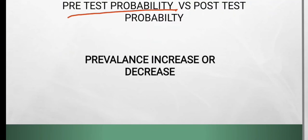Next is pre-test probability versus post-test probability. Pre-test probability is the probability of having the disease before doing the test. Post-test probability is the probability of having the disease if you test positive for that disease.